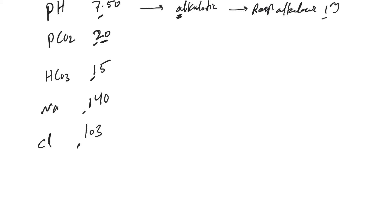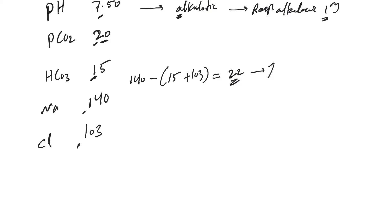The next thing we said: always immediately calculate the anion gap. The anion gap here is 140 minus the sum of 15 plus 103. This is the bicarb from the serum — from the BMP, not from the ABG. So this equals 22. The anion gap is increased, which indicates there is an increased anion gap metabolic acidosis. This is the second disorder, so already we have two.